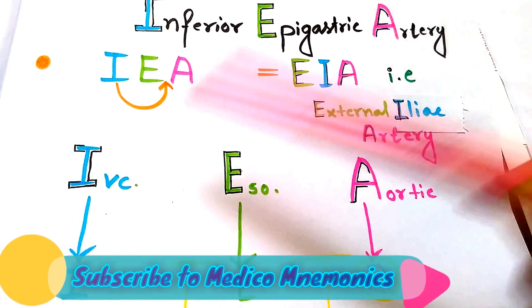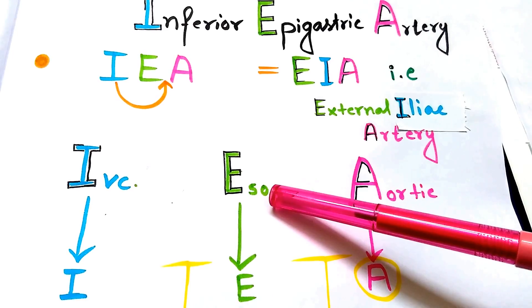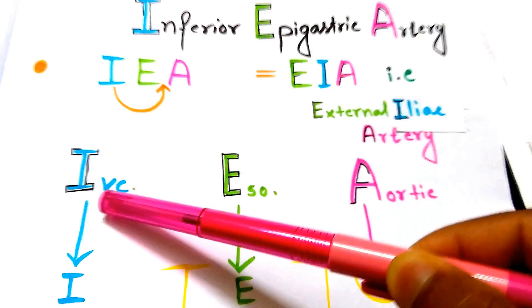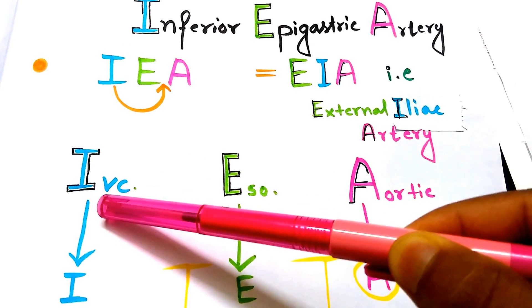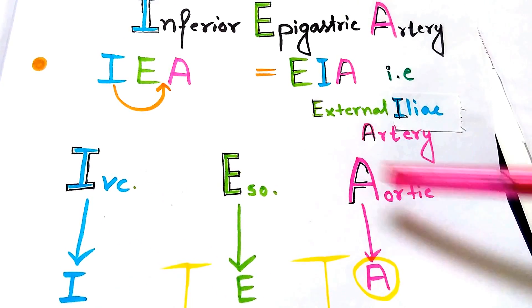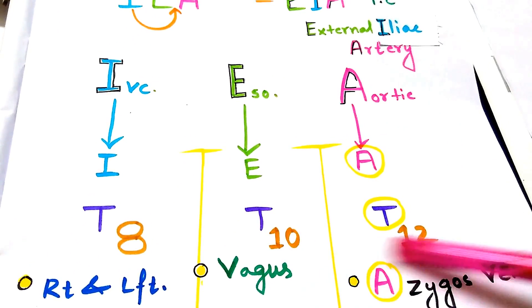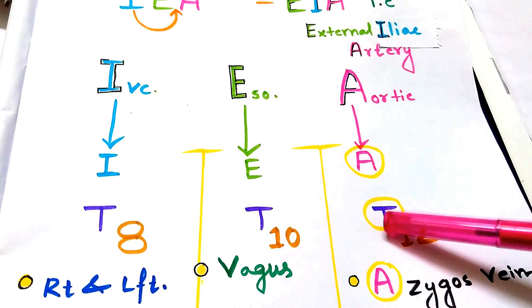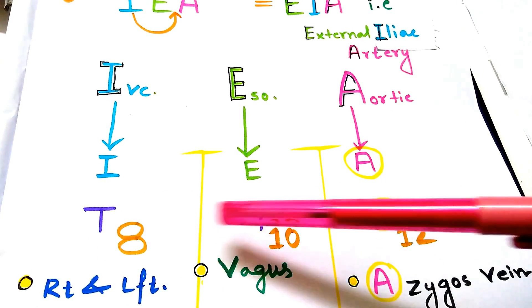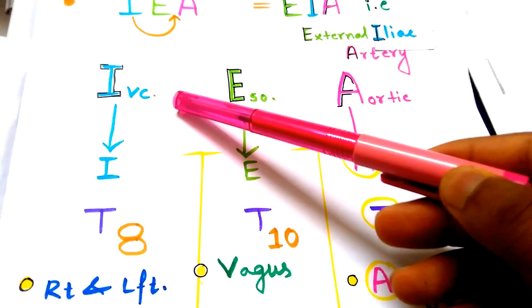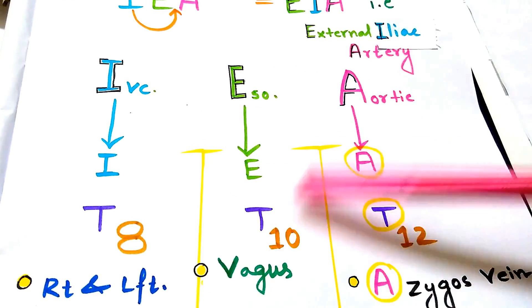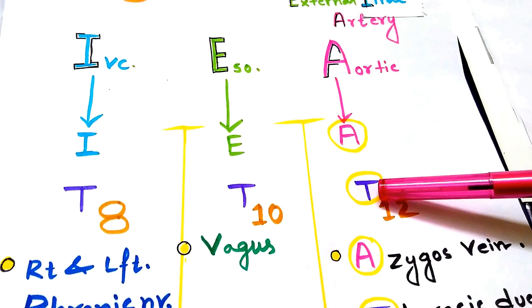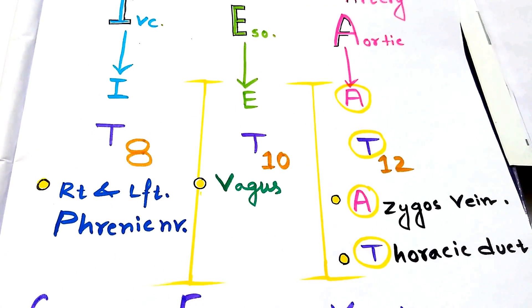Now we have IVC opening, Esophageal opening, and Aortic opening, that is IEA - Inferior Epigastric Artery. We can remember by that the sequence is IEA. Now just put 8, 10, and 12 serial and put T in all the segments. IVC opening is at the level of T8, Esophageal opening at the level of T10, and Aortic opening at the level of T12.